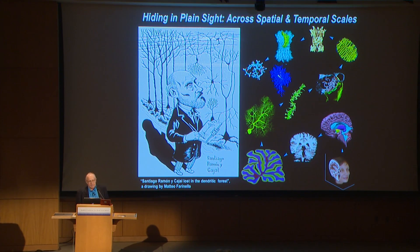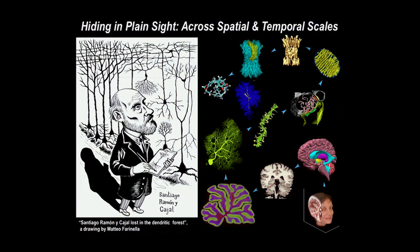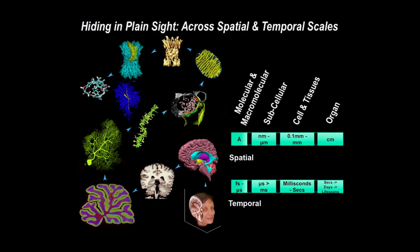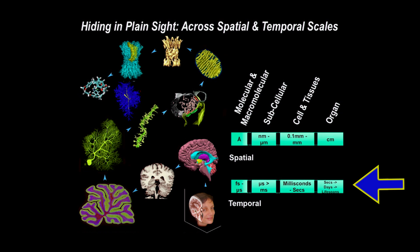If he were alive today, he would be in wonderment regarding all of the scales of details that we can now describe with different kinds of microscopies and labels. And he would probably be, as I think this conference is considering, amazed at the gaps. So where are we limited with regard to filling gaps across either the spatial scales — all the way from macromolecules to organs — to the temporal scales?